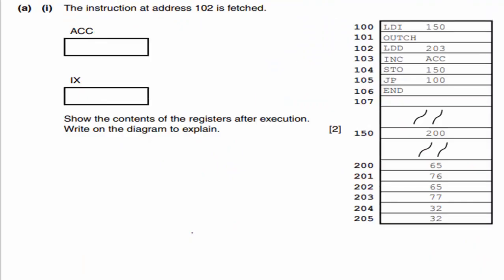The next question says: the instruction at address 102 is fetched, and 102 gives us LDD 203. Go ahead and pause and give this a go. LDD means direct addressing — load the contents of address 203 directly. Address 203 contains 77, and that gets loaded into the accumulator. What about the index register? Nothing — you do not put zero, because that would assign a value to it. There is no code here after address 102 is fetched to give the index register any value, and remember, zero is a value. Easy two points.